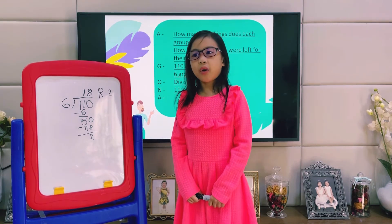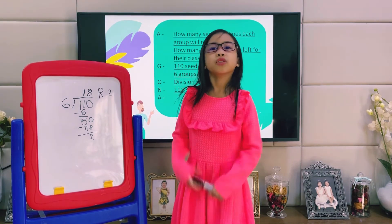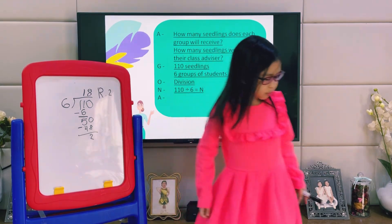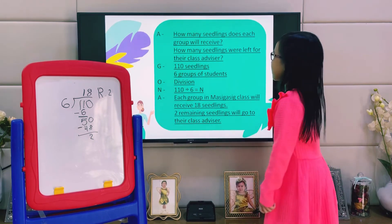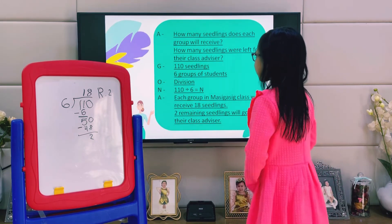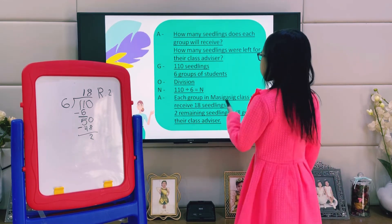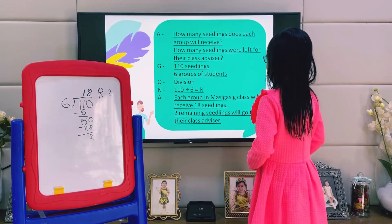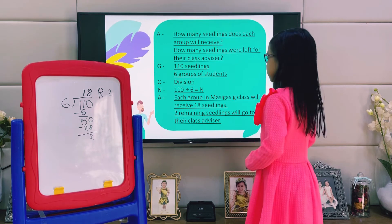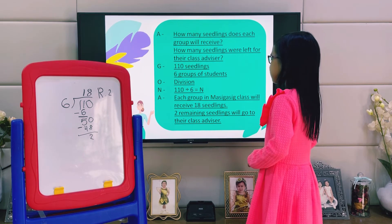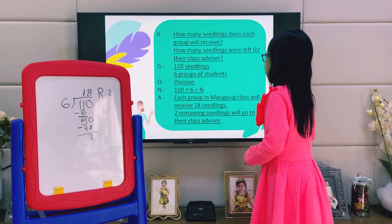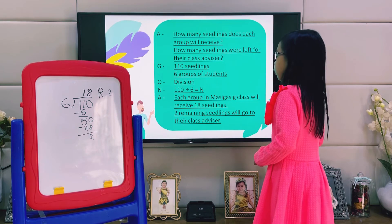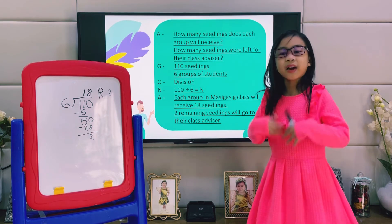Now let's go back to our AGONA. The answer is: each group in the class will receive 18 seedlings. The 2 remaining seedlings will go to their class advisor.